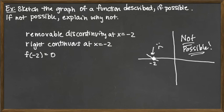We tried and we ran into trouble because we can't simultaneously have a removable discontinuity and be right continuous. And so since it's not going to be possible, we need to be able to explain why not. And really using some limit statements would be the most concrete way of explaining.